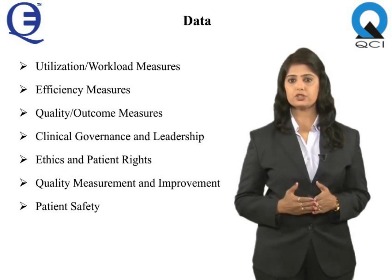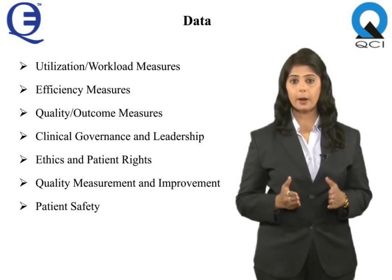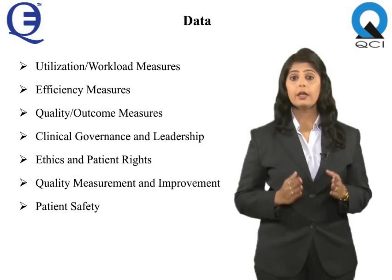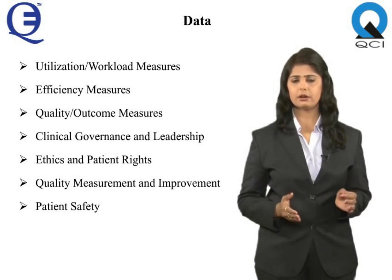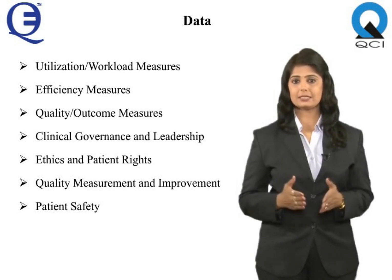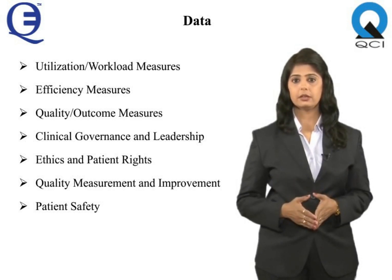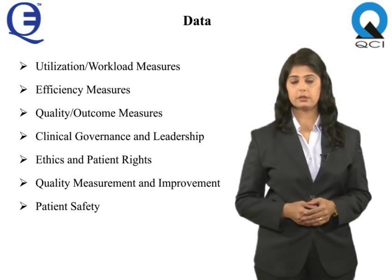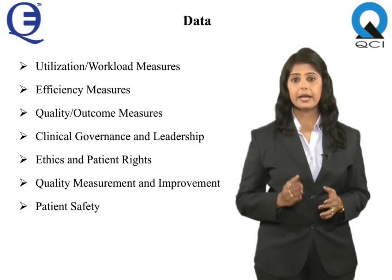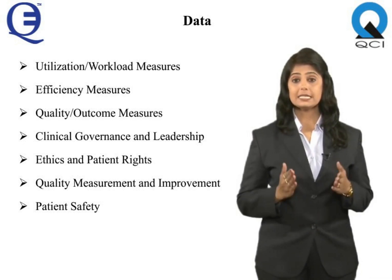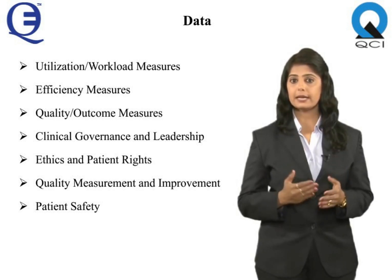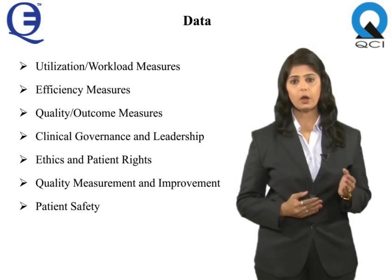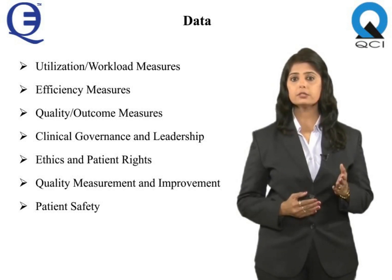Utilization measures include: number of inpatients, number of outpatients, number of procedures including surgical, and number of tests. Efficiency measures include: average length of stay, bed occupancy rate, day case rate, and operating theatre utilization. Quality or outcome measures are also tracked.